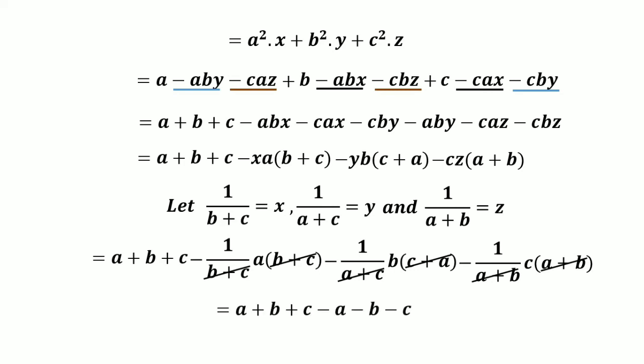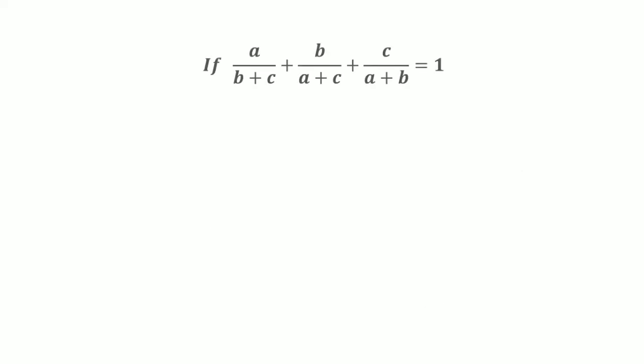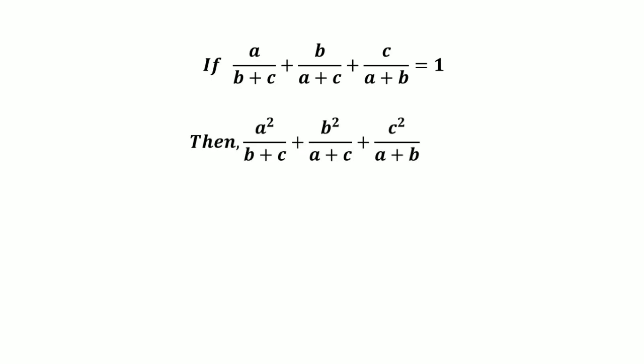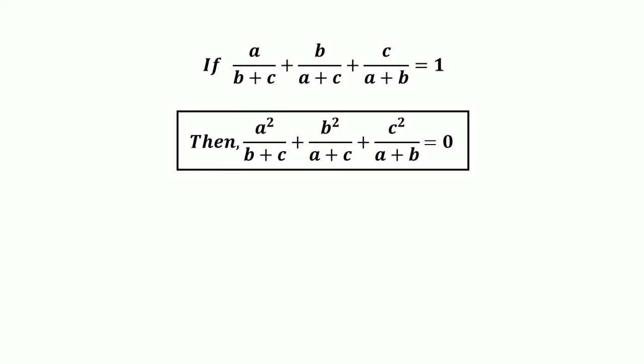After cancellation, we get a plus b plus c minus a minus b minus c, which equals 0. So we have found that if a divided by (b plus c) plus b divided by (a plus c) plus c divided by (a plus b) equals 1, then a squared divided by (b plus c) plus b squared divided by (a plus c) plus c squared divided by (a plus b) equals 0.